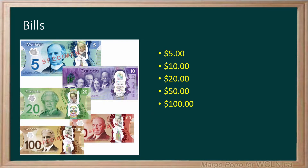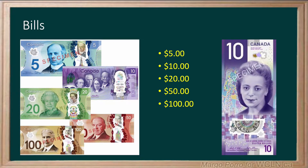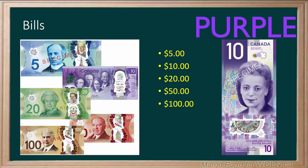In 2018, Canada issued a new ten dollar bill with a portrait of Viola Desmond, a Black Nova Scotian businesswoman who challenged racial segregation in 1946. Like all ten dollar bills, it is purple.